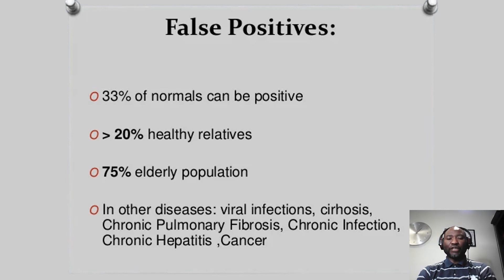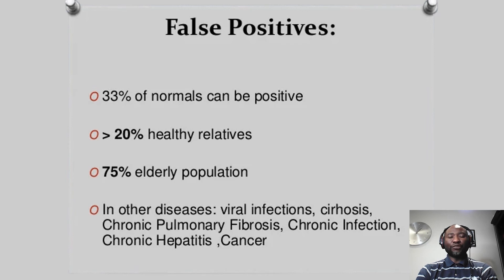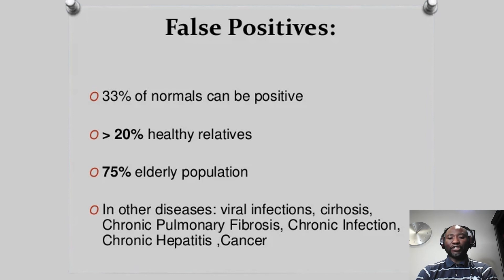There are lots of false positives you can get with ANAs. It is important to understand that just because someone has a positive ANA result doesn't necessarily mean that individual has disease. You need signs and symptoms of connective tissue disease to suggest that you actually have disease. At least over 30% of people regarded as normal will have a positive ANA — these are healthy individuals. The older you get, the more likely you are to have a positive ANA. You always have to take this in the right clinical context.